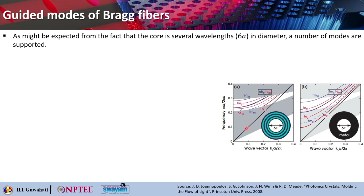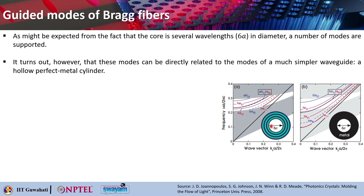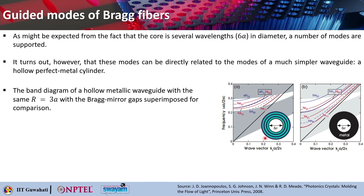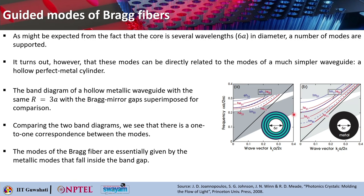As the core is basically several wavelengths in diameter, a number of modes are basically supported — so it becomes multimode. It turns out that these modes can be directly related to the modes of a much simpler waveguide: a hollow perfect metal cylinder. The modes basically correlate. The band diagram of a hollow metallic waveguide with the same R equals 3A can have the Bragg mirror gap superimposed, and by comparing the two band diagrams, we can see that there is a one-to-one correspondence between the modes. The modes of the Bragg fiber are essentially given by the metallic modes that fall within the band gap.